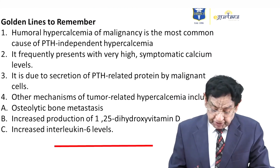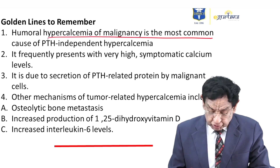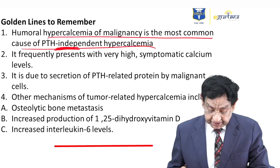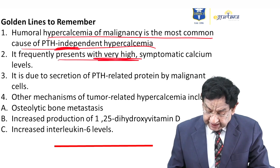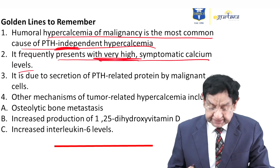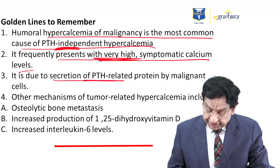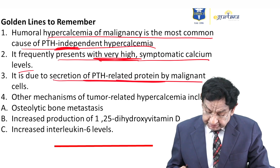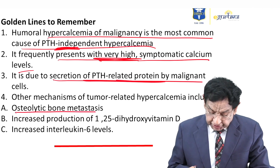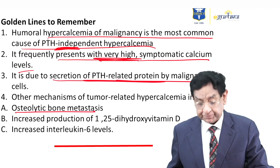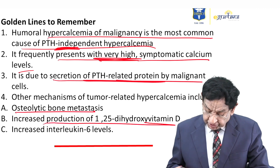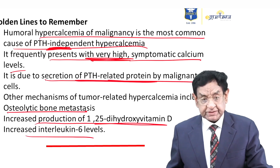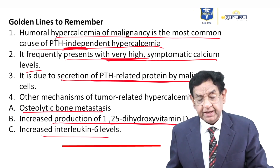Golden line to remember: Humoral hypercalcemia of malignancy is the most common cause of PTH-independent hypercalcemia. It frequently presents with very high, symptomatic calcium levels due to secretion of PTH-related protein by malignant cells. Other mechanisms of tumor-related hypercalcemia include osteolytic bone metastasis, increased production of vitamin D especially by lymphomas, and increased interleukin-6 seen in multiple myeloma.